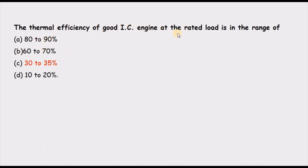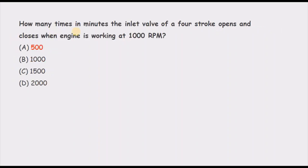The thermal efficiency of an IC engine at rated load is in the range of? The Carnot cycle gives a theoretical maximum of around 60%, so practical values must be lower. The correct answer is 30 to 35%, which represents a good IC engine operating at the higher end of the practical range.